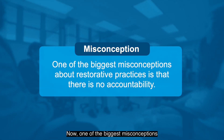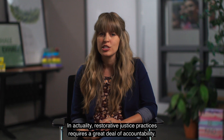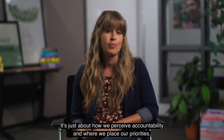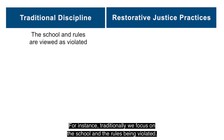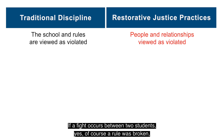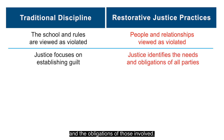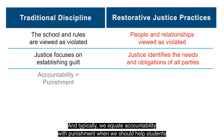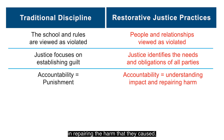One of the biggest misconceptions about restorative practices is that there's no accountability. In actuality, restorative justice practices requires a great deal of accountability — it's just about how we perceive it and where we place our priorities. Traditionally we focus on the rules being violated, but isn't the more important thing that a person and relationships were violated? We focus on finding out who's guilty instead of focusing on the needs and obligations of those involved, and we equate accountability with punishment rather than helping students understand the impact of their actions and repair the harm caused.